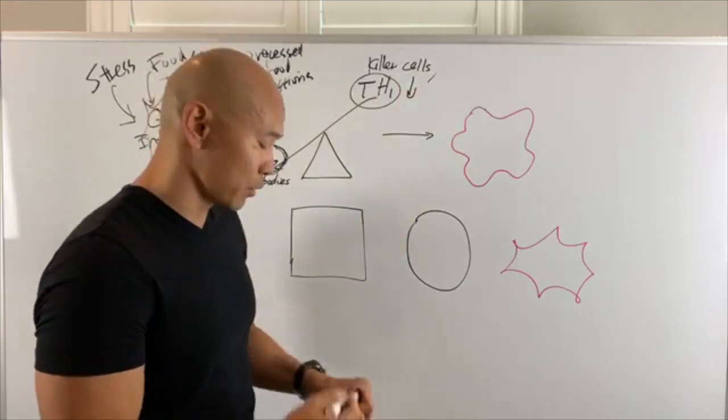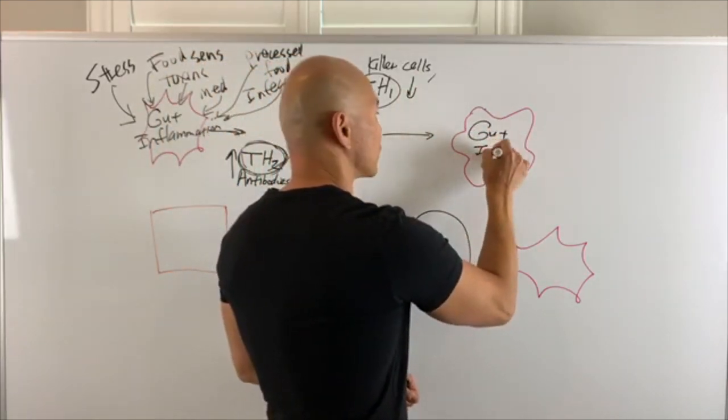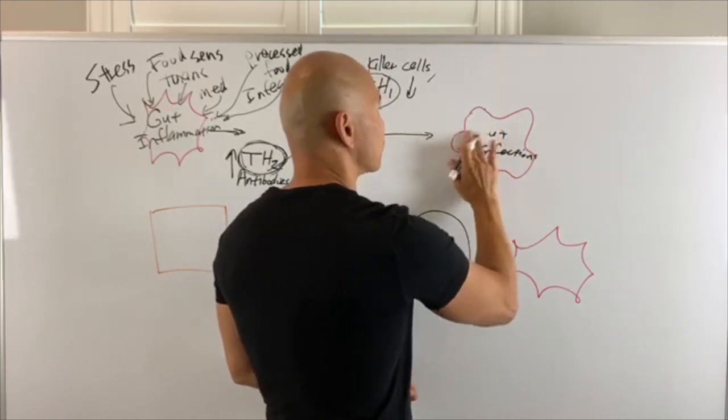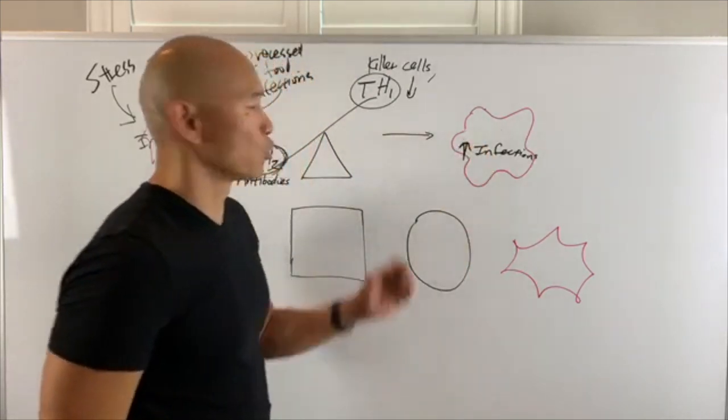This is what we mean by your immune system is out of balance. So the T helper 2 immune system becomes more active, and the T helper 1 killer cells becomes less active. So you get this immune imbalance that lead to this decrease in killer cell activity. Guess what? If you don't have enough killer cells, you can't get rid of gut infections.